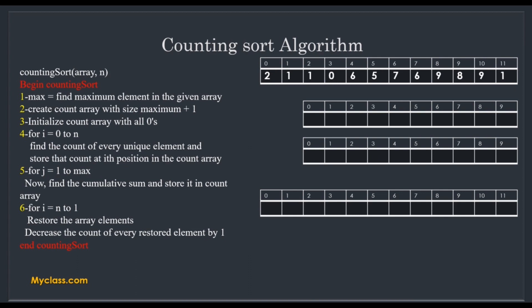The counting sort algorithm contains mainly 6 steps. We are passing an array 'a' and the number of elements 'n'. In this particular example, there are 12 total elements and I am taking values less than 10, only for better explanation. It is also possible to do counting sort with any values. The first step is to find the maximum element in the given array — we check all elements and find which one is the maximum. In this example, max equals 9. This is used to create extra memory for counting sort, which is why it is a not-in-place algorithm.